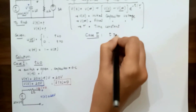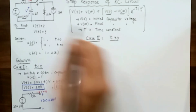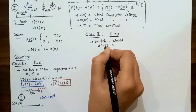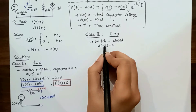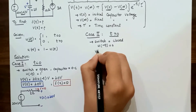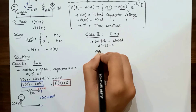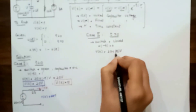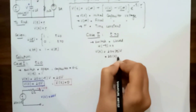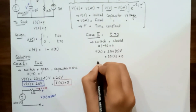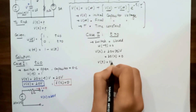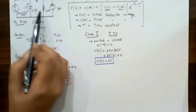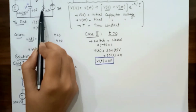Now the second case: when time is greater than zero, the switch is closed. As per the given condition, when time is greater than zero, u(-t) equals zero. Putting that value in, V(t) = 20 × u(-t) = 20 × 0 = 0 volts. So the voltage source across the capacitor when time is greater than zero equals zero volts.